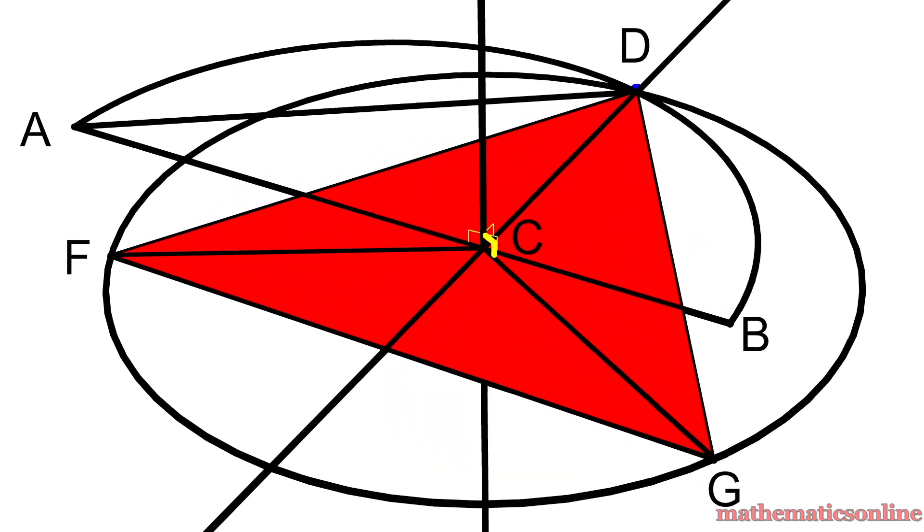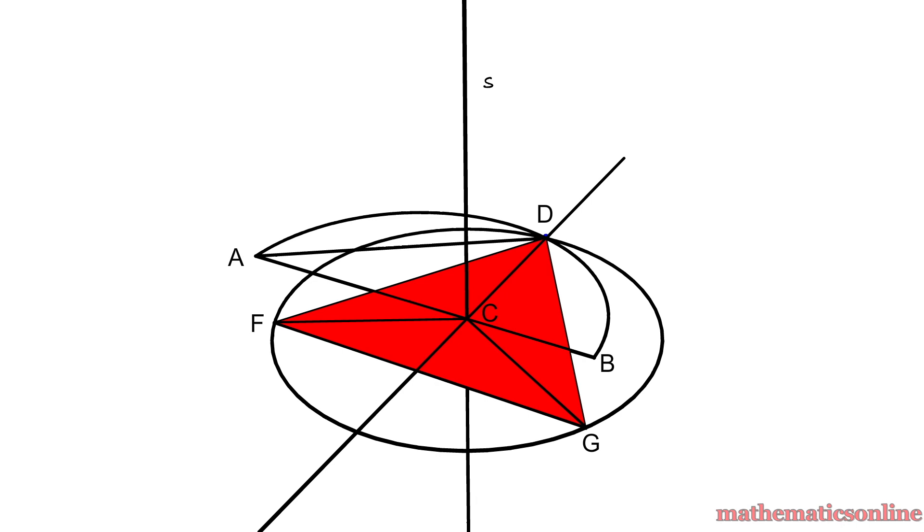As you can see, line S is at right angles with all the lines going through point C. Now I'd like to point out that line AB and S are on a 2D plane.